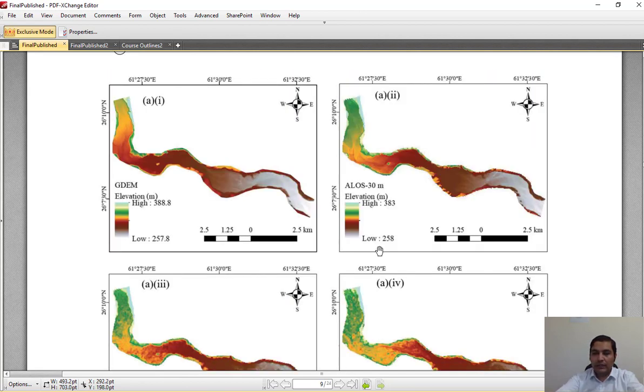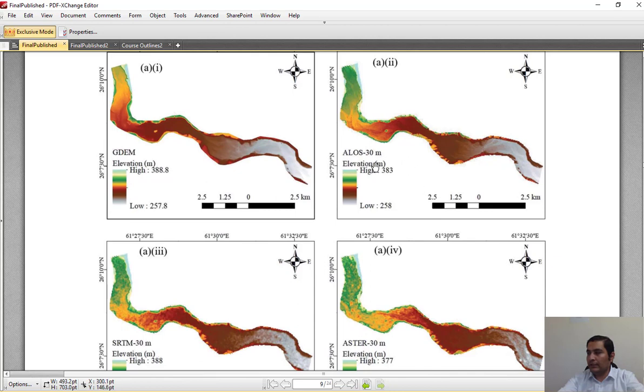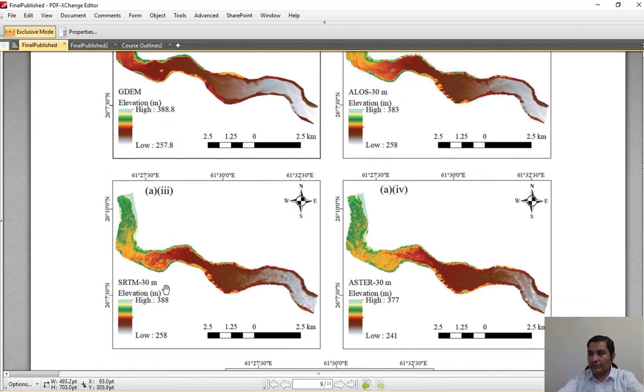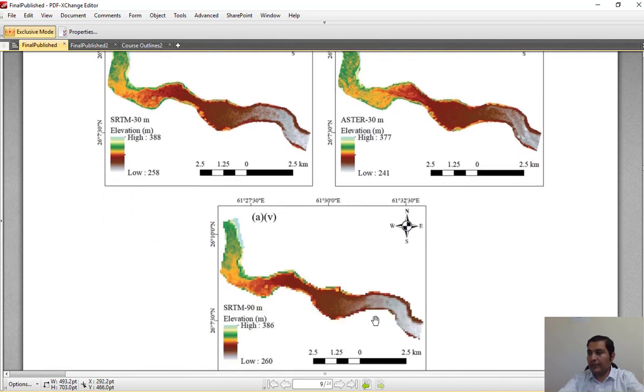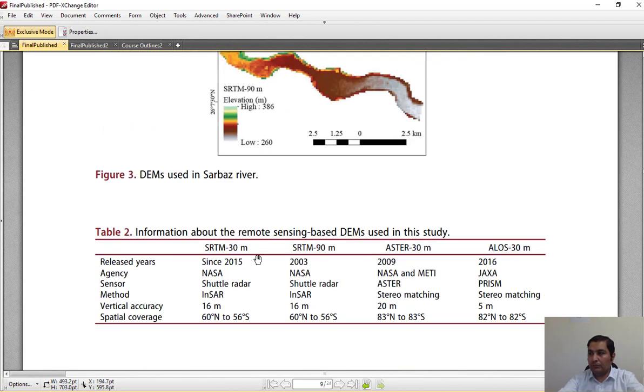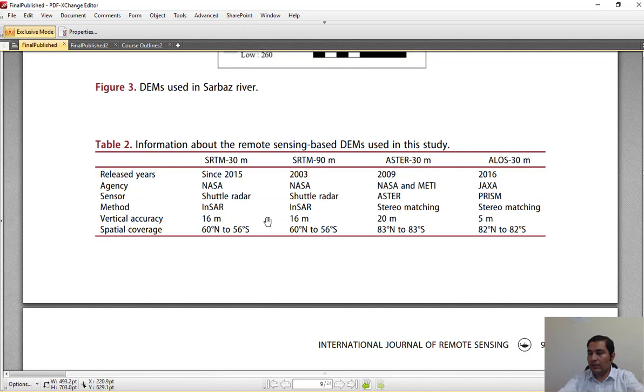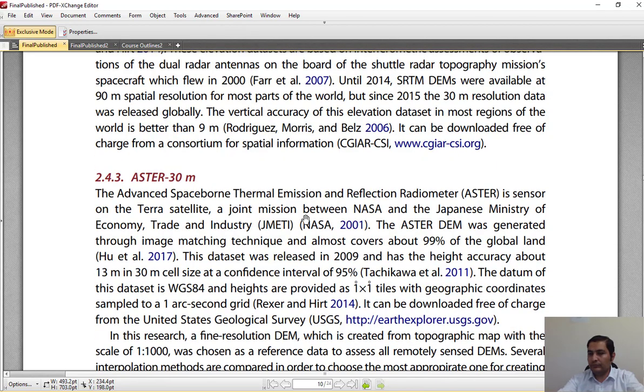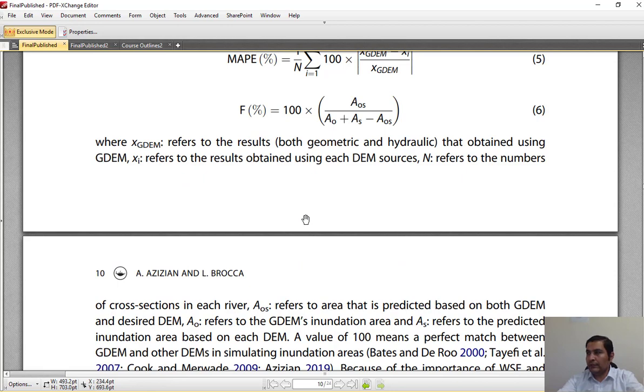In this study, we used different DEM sources. For example, GDM, which is created based on ground topographic maps, and the next ones based on ALOS, SRTM centimeter, ASTER centimeter, and SRTM 90 meters. The details of these datasets are presented in this table.